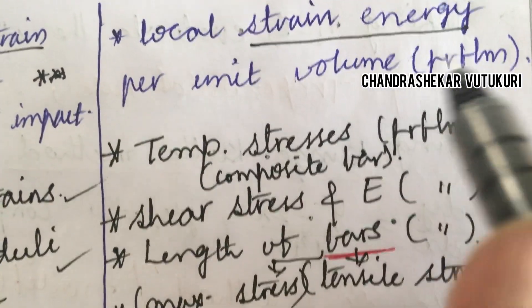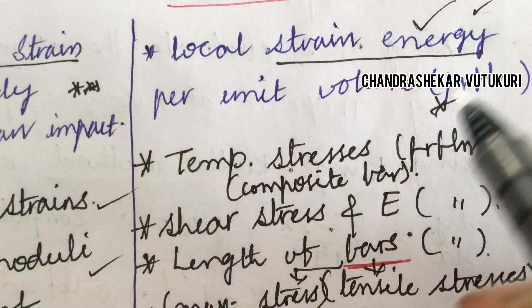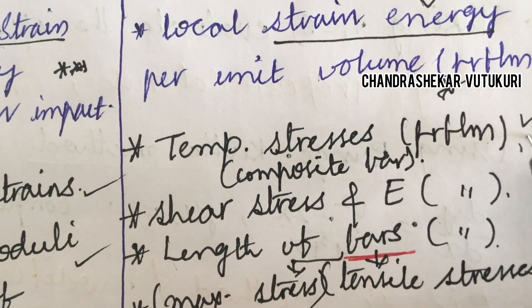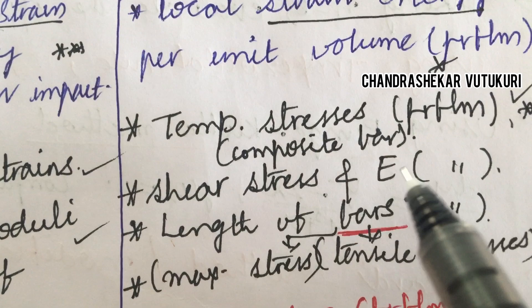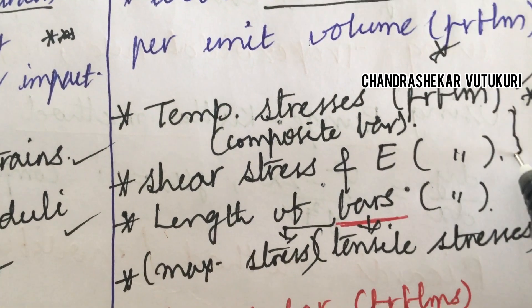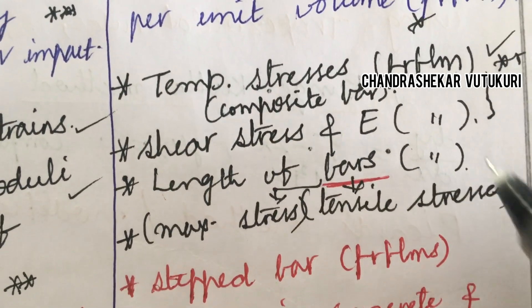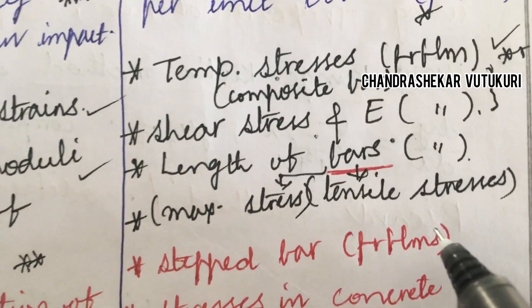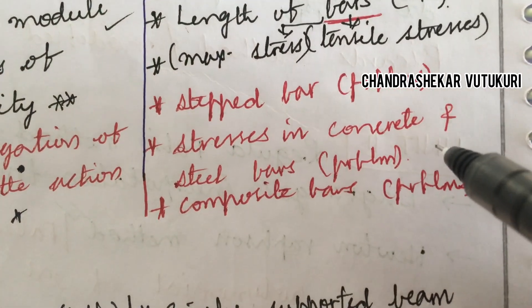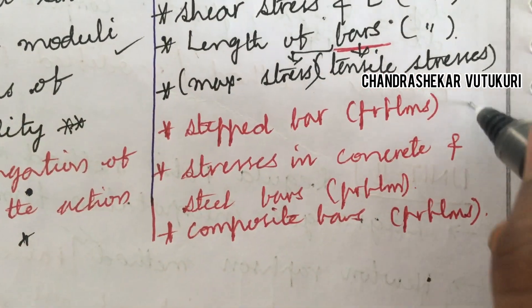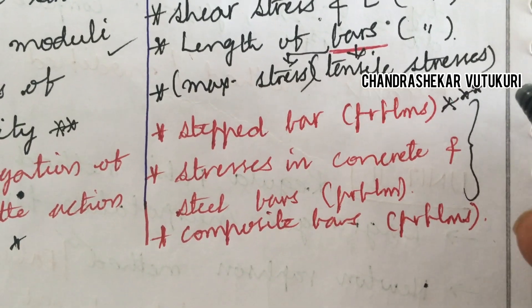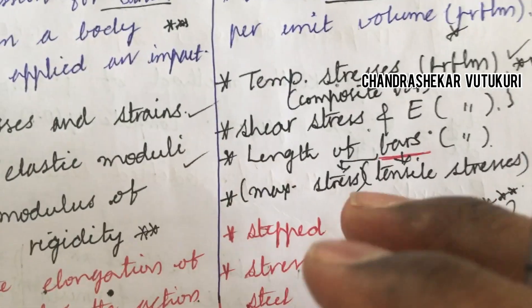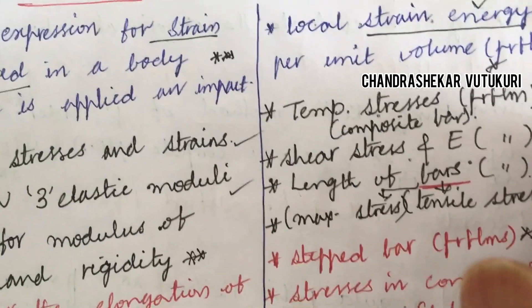Strain energy per unit volume problems will be asked. Temperature stresses of the composite bar — both problem and theory — will be asked. Shear stress and Young's modulus related problems also have a chance. Length of bars, maximum stress, tensile stress related to stepped bars, as well as stresses in concrete, steel bars, and composite bars — you must not skip any part of this; work out every one of them thoroughly to score out of full marks.